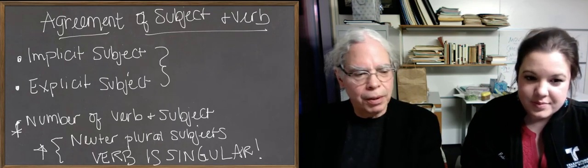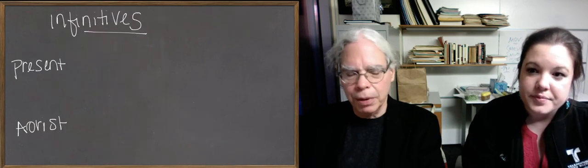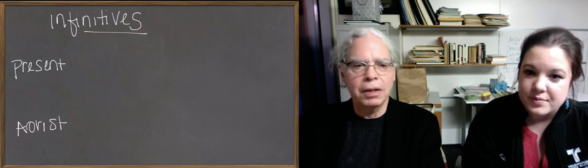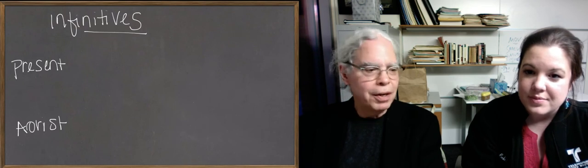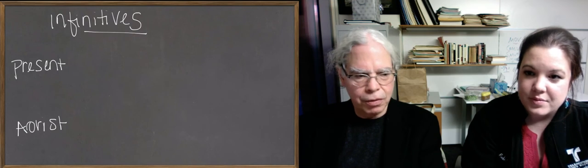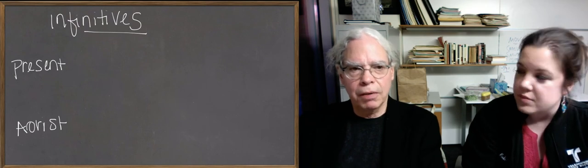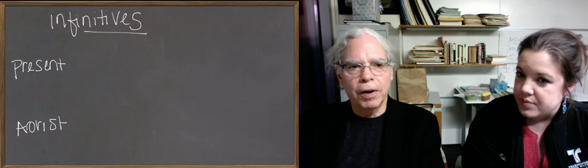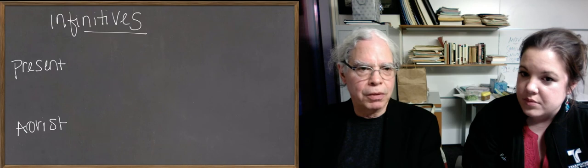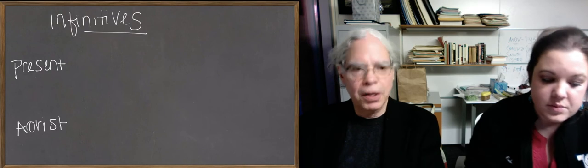So the second thing we want to talk about is infinitives. And infinitives in Greek, the book gets a little bit messed up about this. So you have to be careful. The book at one point says that infinitives have tense and then it backtracks on it and says, no, they don't. But infinitives in Greek, all infinitives, and these are two are no exception, only have aspect. Remember, so aspect is about the kind of action that something is. Unfortunately we've inherited a grammatical terminology that doesn't know about aspect. So what the book calls the present infinitive is really the infinitive of the imperfective aspect.